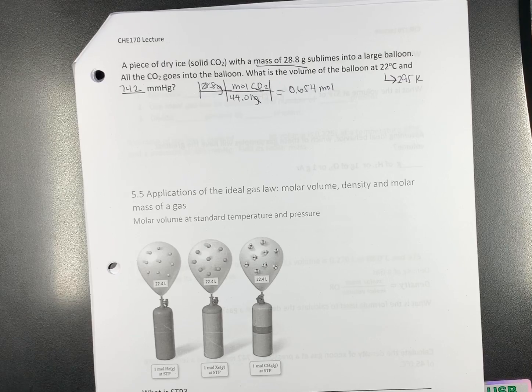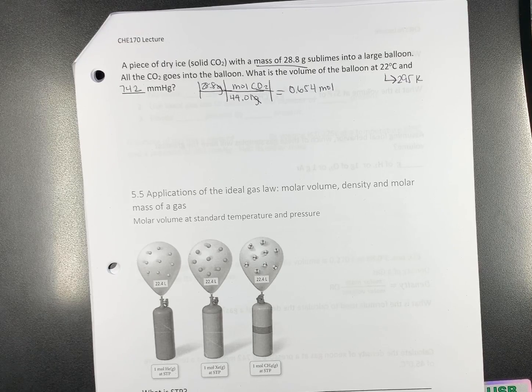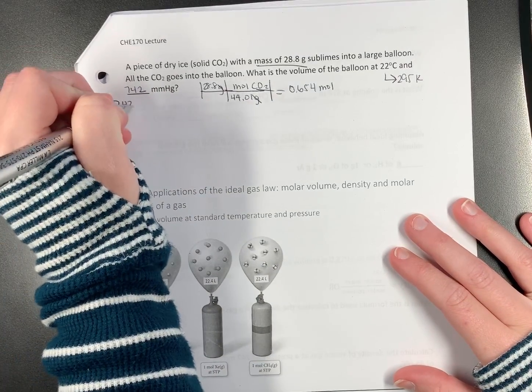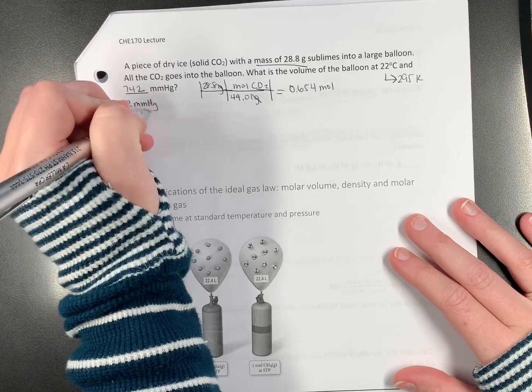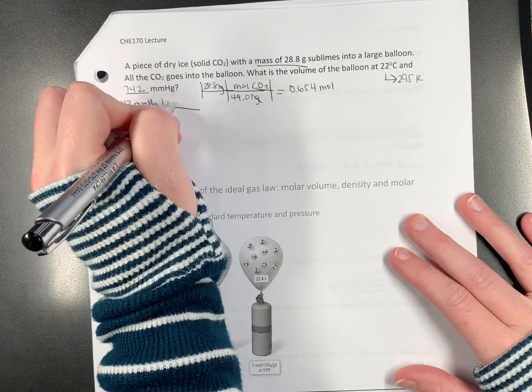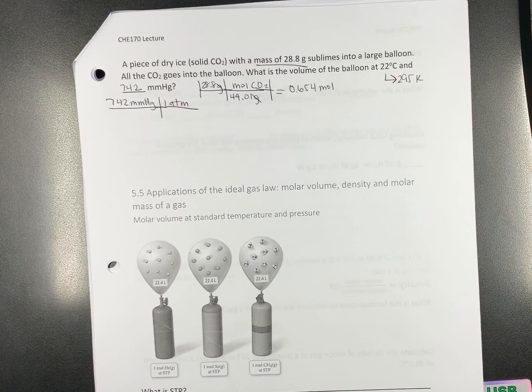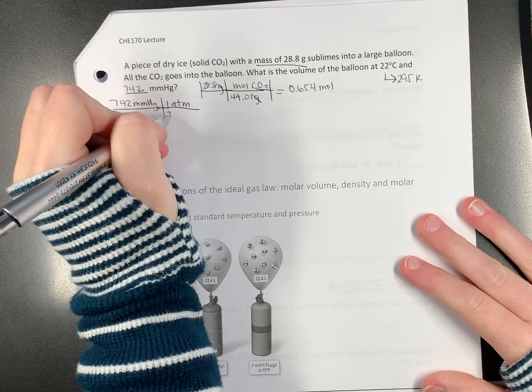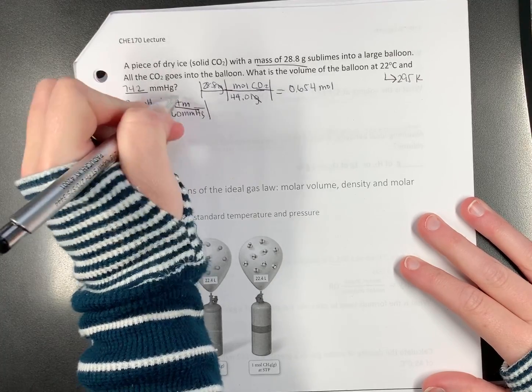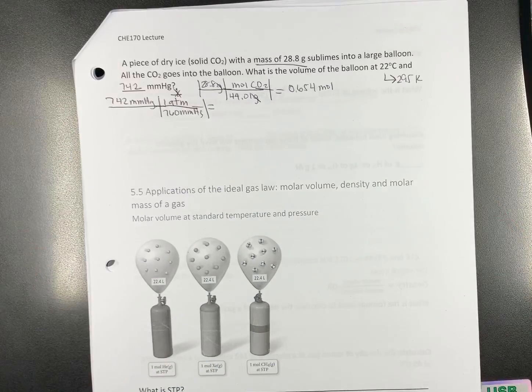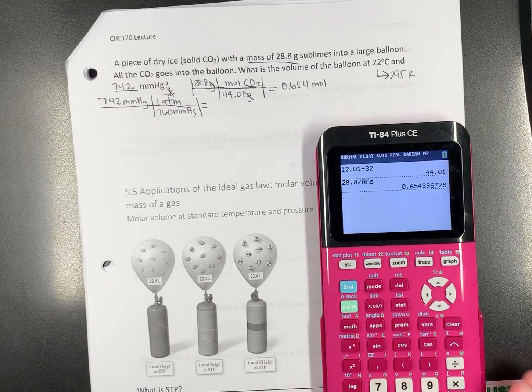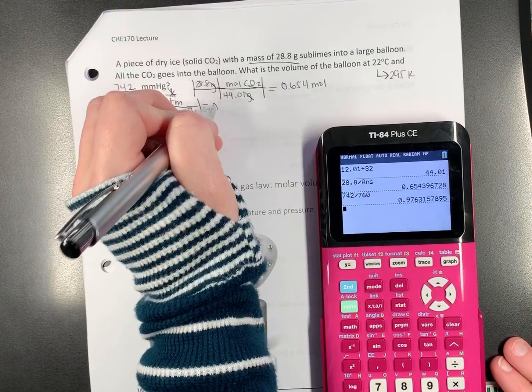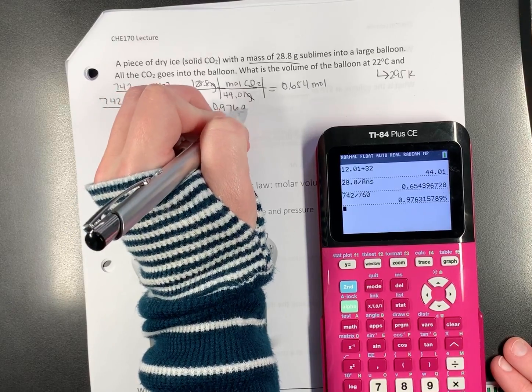What else do we need to convert? We need millimeters of mercury. What does that unit need to be? Atmospheres. What's the conversion for that? It's on the first page. Flip back. 760. That's the conversion you need to know. One atmosphere is 760 millimeters of mercury. Put a star by that. So, 0.976 atmospheres.